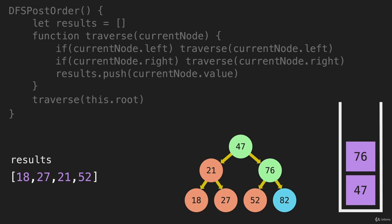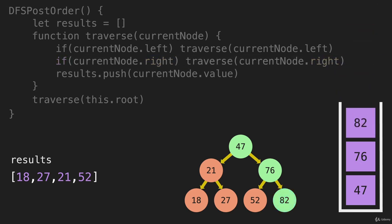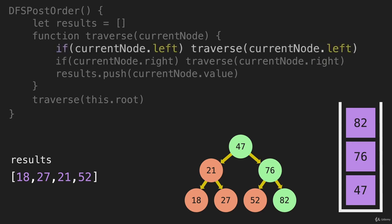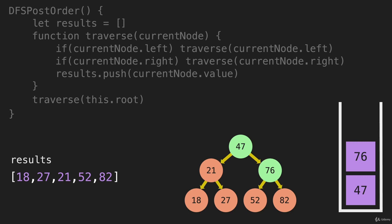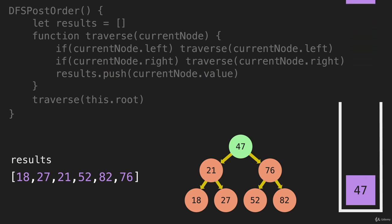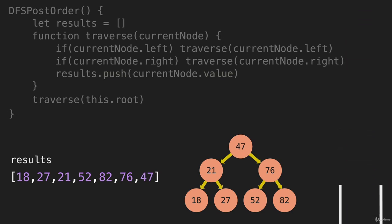76 is at the top of the call stack. It has already gone left, so now it can go right, which pushes the 82 onto the call stack. The 82 is going to look left and right — there's nothing there — and it's going to push its value into the results array. We pop that from the stack. Now 76 is at the top of the call stack. It's already gone left and right, and now it can push its value into the array. We pop that from the call stack. 47 is now the top of the call stack — it's already gone left and right — and now it can push its value into the array. The 47 pops from the call stack, as it was the node called with the original function call, which means we are done running those functions.